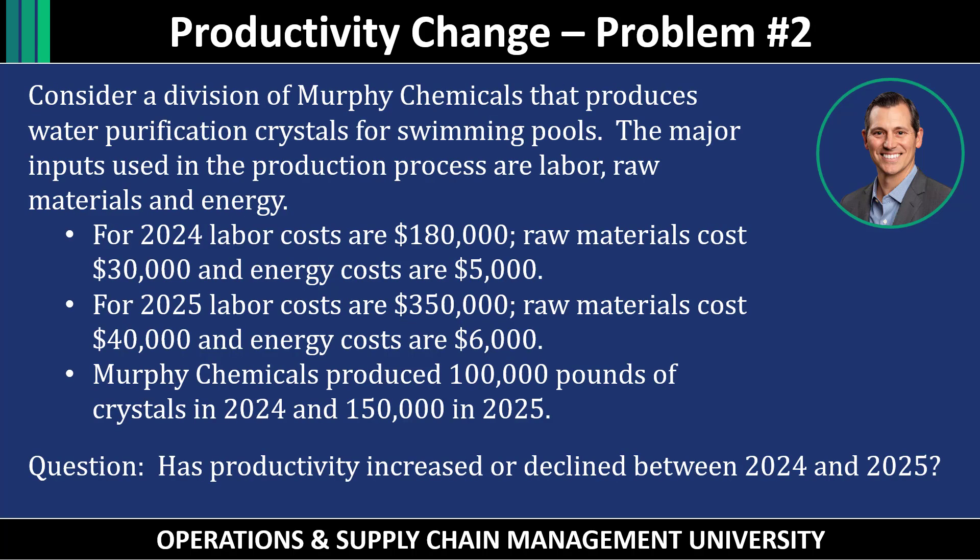Problem number two: consider a division of Murphy Chemicals that produces water purification crystals for swimming pools. The major inputs are labor, raw materials, and energy. For 2024, labor costs are $180,000, raw materials are $30,000, and energy is $5,000. For 2025, labor costs are $260,000. Murphy Chemicals produced 100,000 pounds of crystals in 2024 and 150,000 pounds in 2025. Has productivity increased or declined between 2024 and 2025?